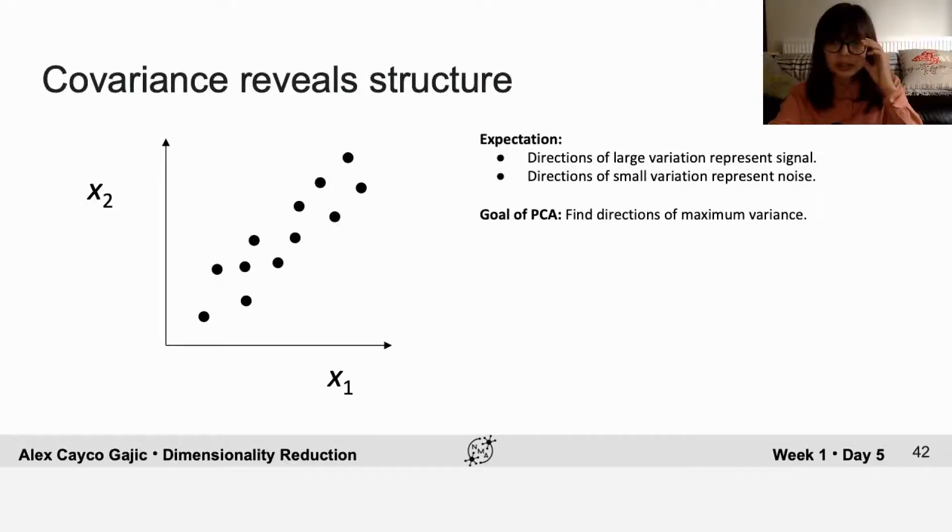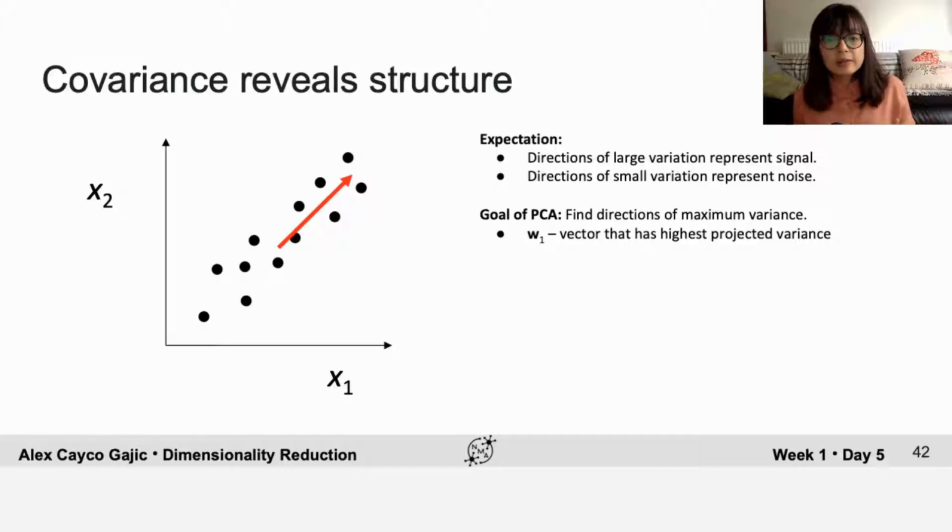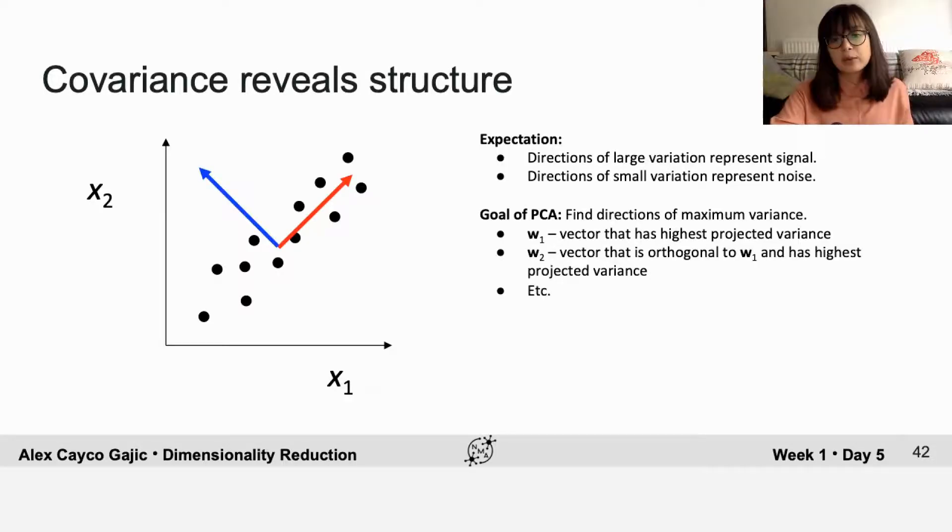So how do we actually find these directions? The first step is to find the vector that has the highest projected variance. You can sweep over all possible vectors in your vector space until you find one where the variance of the projected data is maximized. This is called the first principal component. After this, we find the second principal component by finding the vector with highest projected variance while being orthogonal to the first principal component. If we continue this, at each step we're maximizing projected variance constrained to vectors orthogonal to all previous principal components we found.